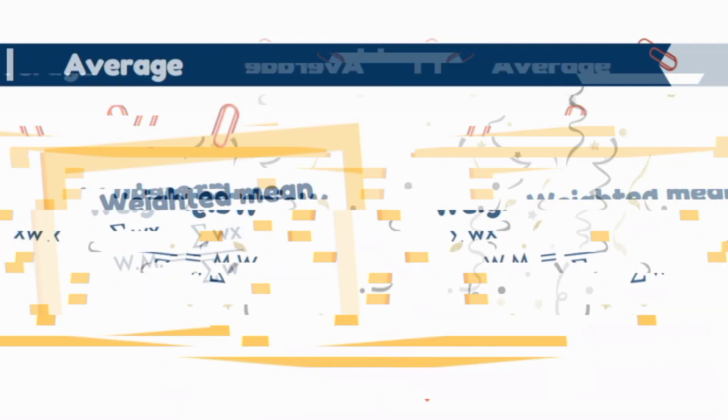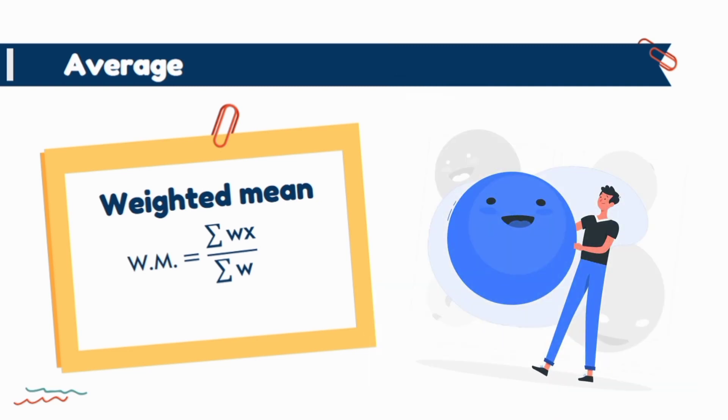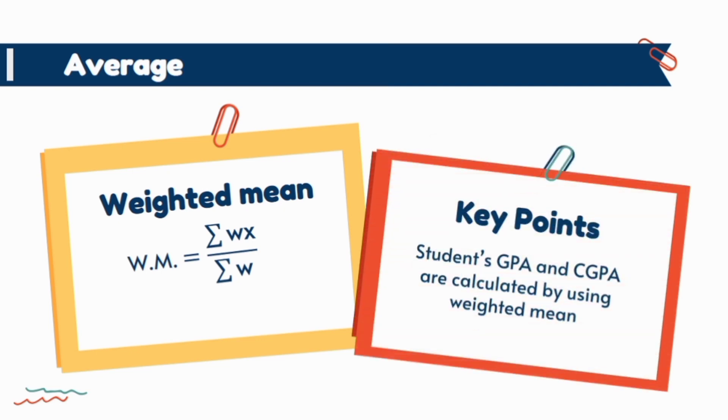Sometimes we want to find the average where the values have not equal importance, then we associate certain numerical values as a weighting factor to express their relative importance. These values are called weights. It is calculated by this formula.